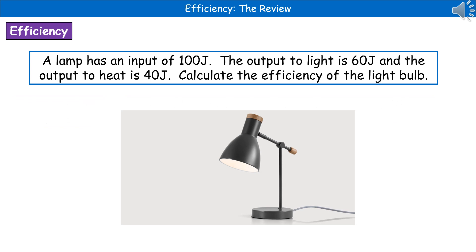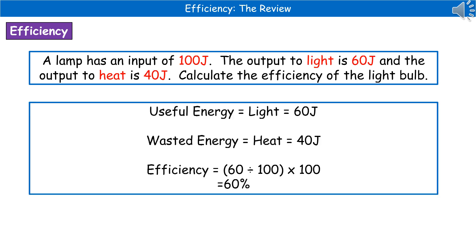The kind of question they could ask you about efficiency is given here. A lamp has an input of 100 joules. The output to light is 60 joules and the output to heat is 40 joules. Calculate the efficiency of the light bulb. The first thing we do in any calculation question is highlight, underline, circle, or jot down the key bits of information, which I've done in red for you.